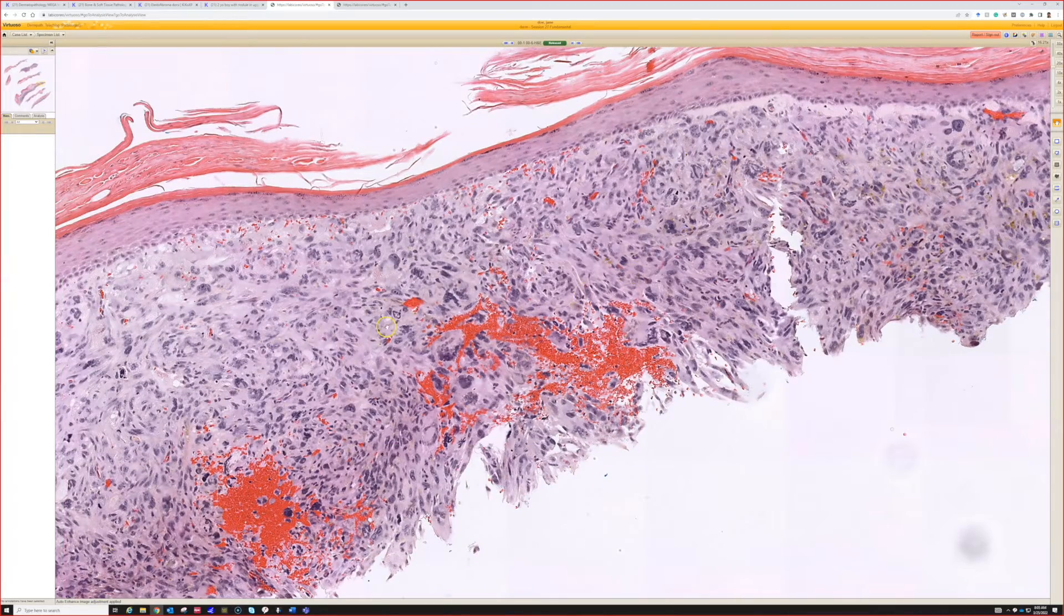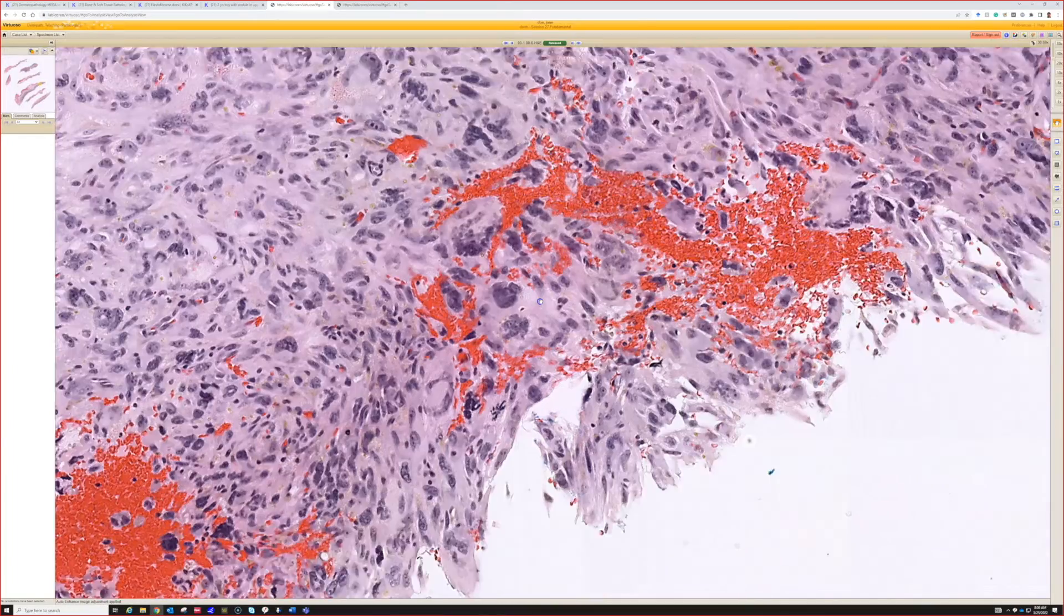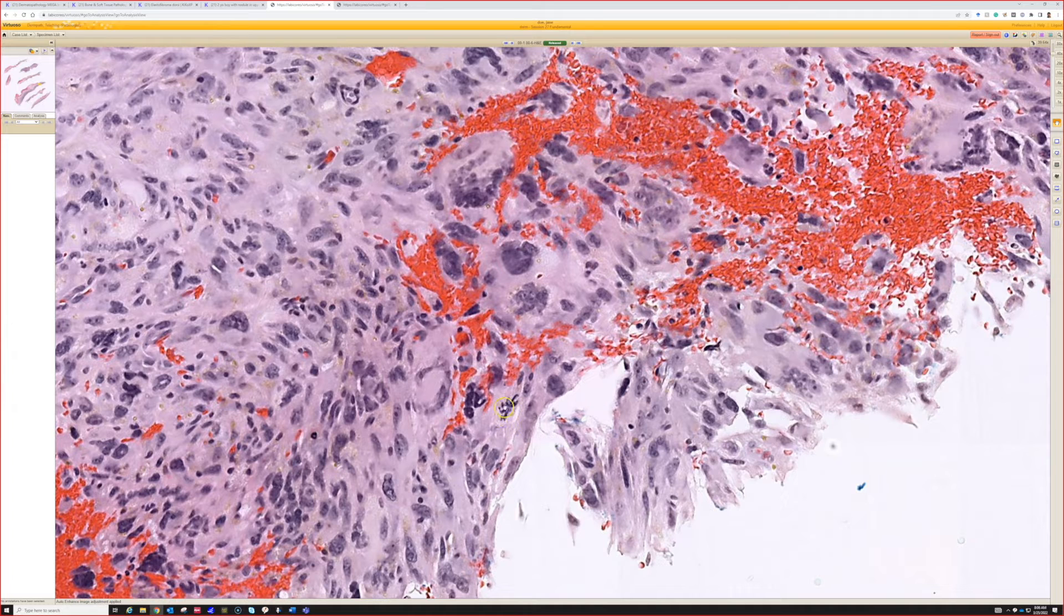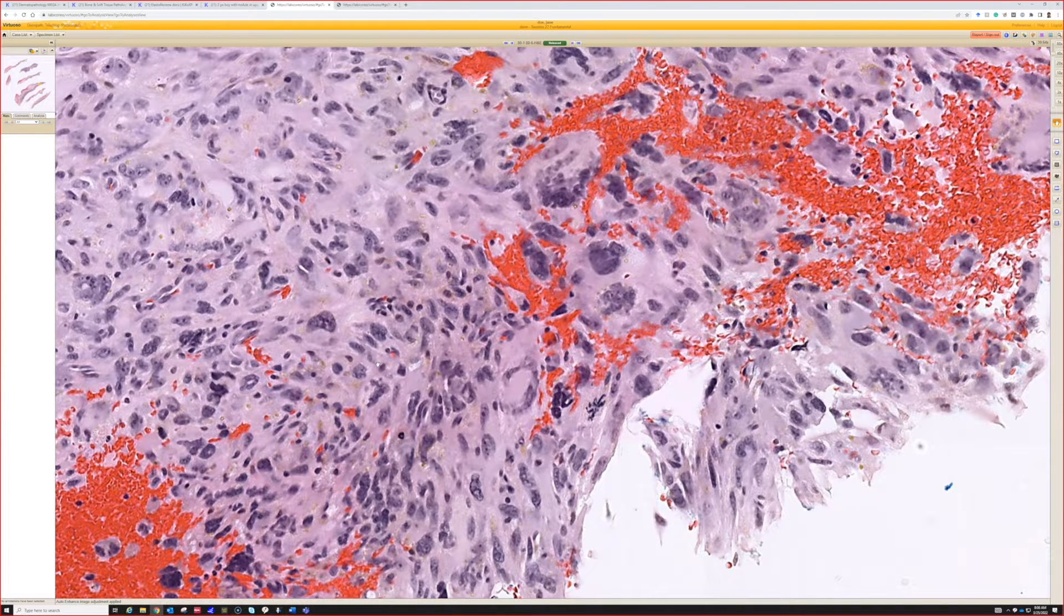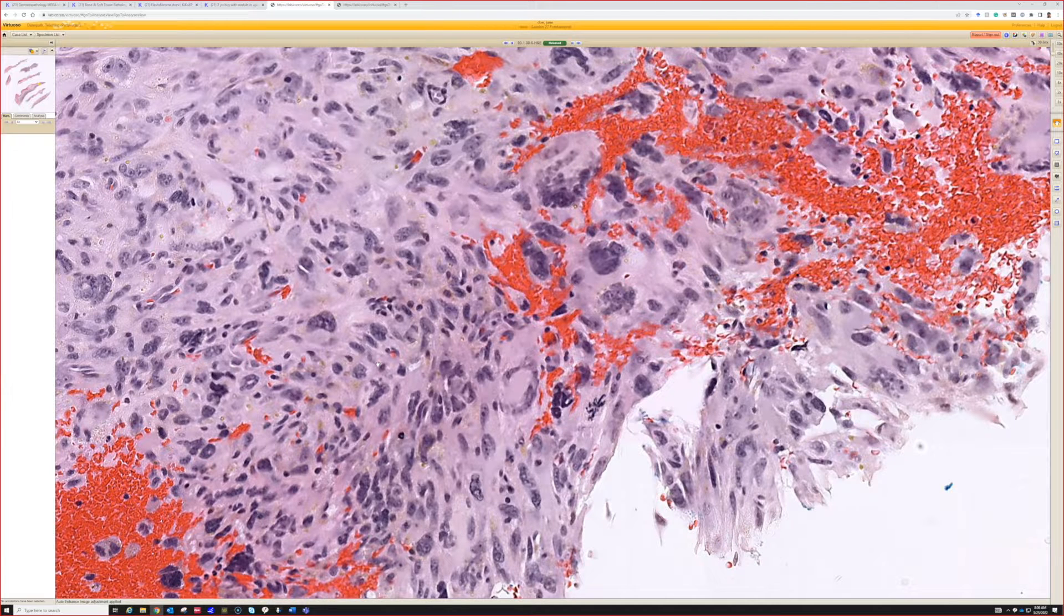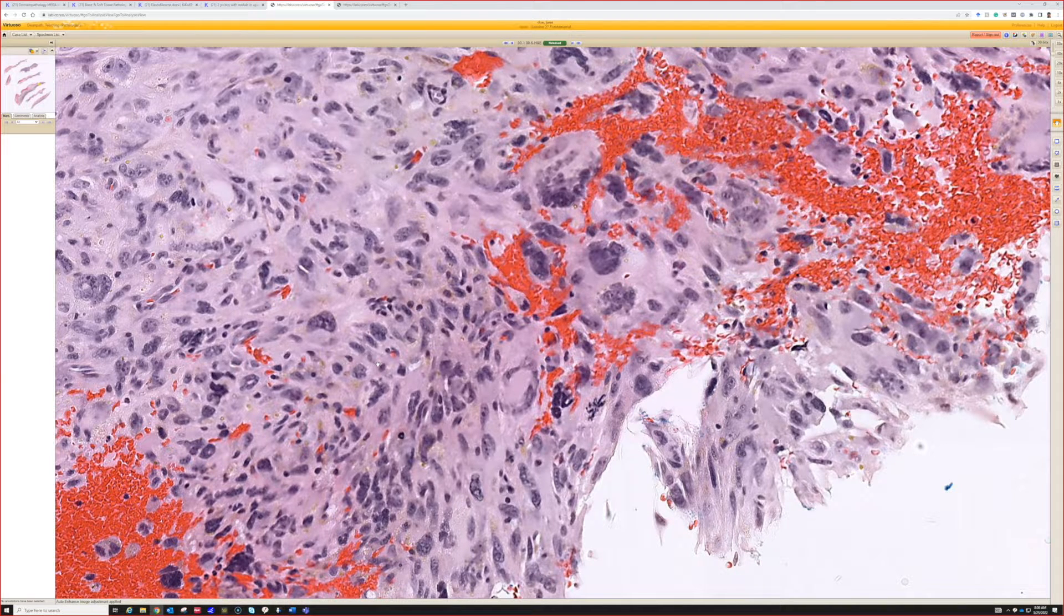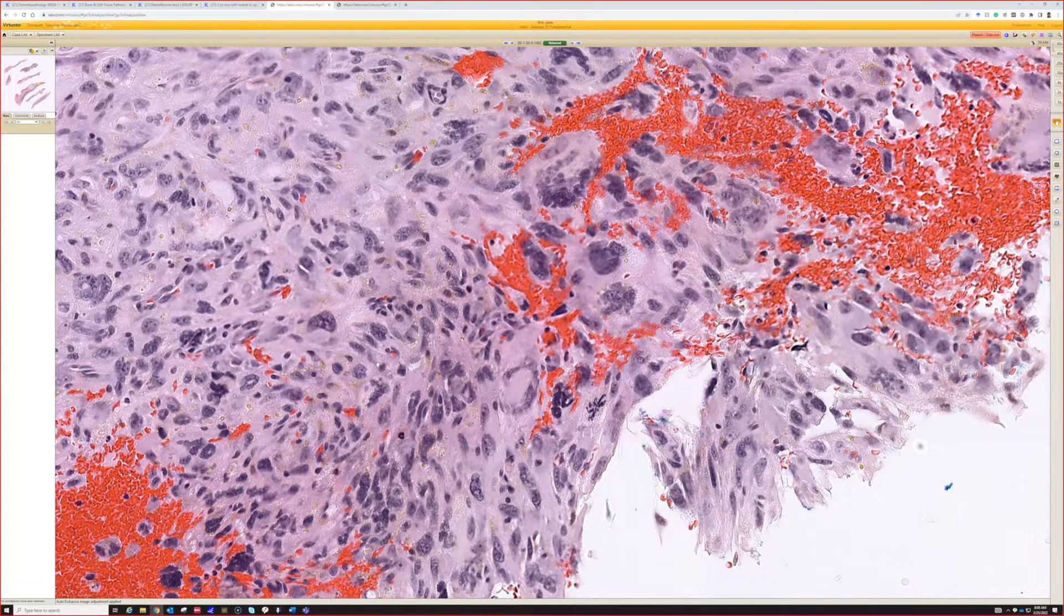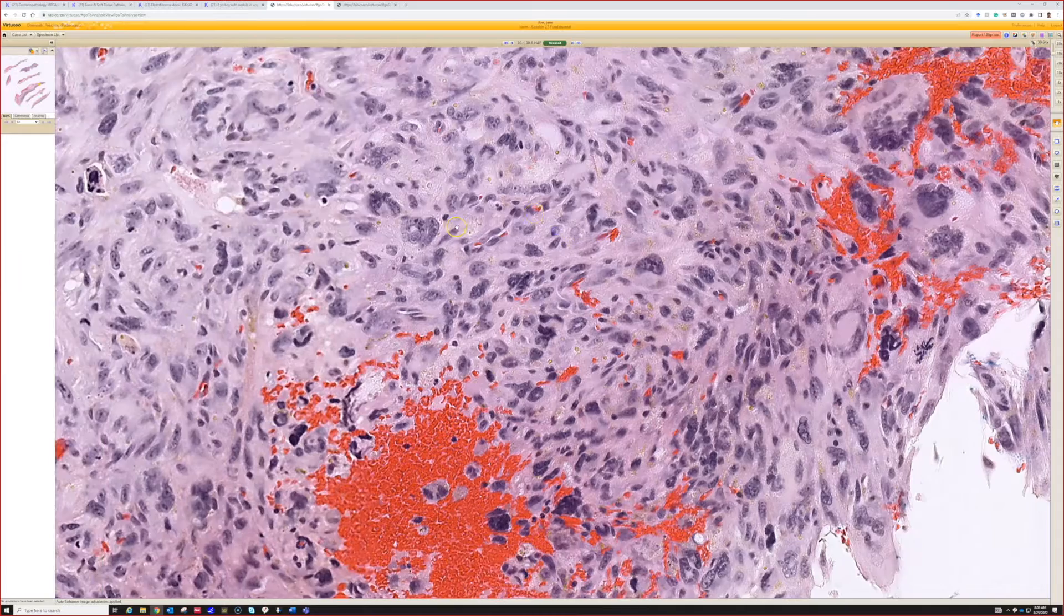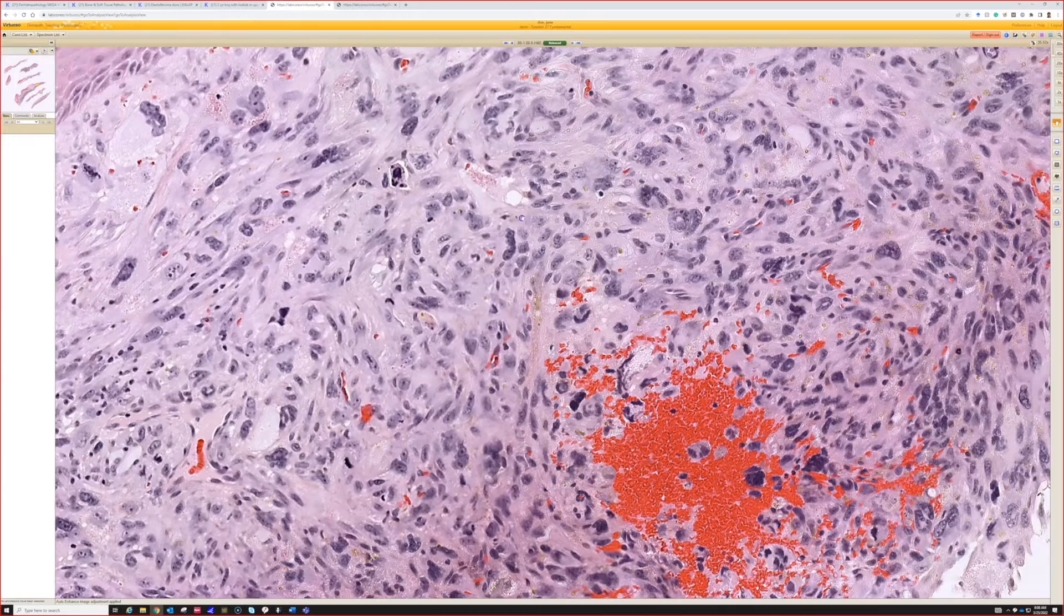But we, in order to exclude all the other things, we have to use S100 to pull out melanoma, spindle cell melanoma. For spindle cell melanoma, we should do keratins. It can be a leiomyosarcoma. So we have to do Desmin. And then, just for confirmation, we can do CD10.